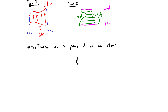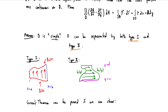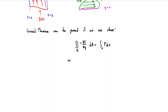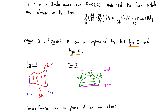Identity number one: the double integral over D of minus dP/dy with respect to area should equal the path integral around the boundary of P dx. I get this by zeroing out the Q in the vector field, which zeros out Q but leaves this minus sign — that's where the minus comes from. We also have to show identity number two: the integral over D of dQ/dx with respect to area should equal the path integral of Q dy. That's what happens if you zero out the P component.